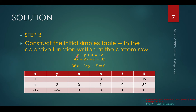For the first equation, the coefficients of x, y, and a are all equal to 1, so we have 1, 1, 1. There is no b, so the coefficient is 0, and no z, so 0. On the right-hand side we have 12. In the second equation, 4x plus 2y plus b equals 32: coefficients are 4, 2, then 0 for a, 1 for b, 0 for z, and 32 on the right. For the objective function row, we have negative 36, negative 24, then 0 for a and b, 1 for z, and 0 on the right-hand side.